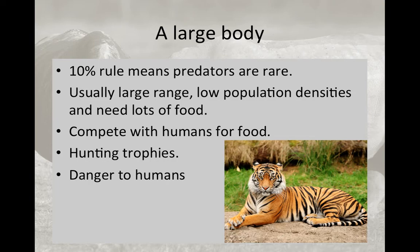The 10% rule states that there should be roughly 10 times as many prey individuals to sustain one predator, meaning predator populations are much smaller and depend entirely on prey populations. Another problem with large predators is that they are often seen as dangerous to humans and end up being hunted or treated as trophies, or hunted by local populations if they compete with humans for food resources.